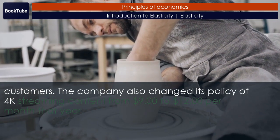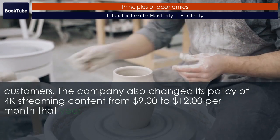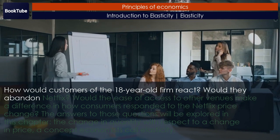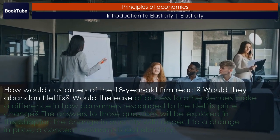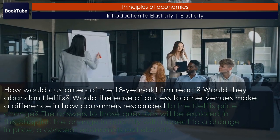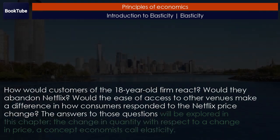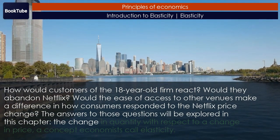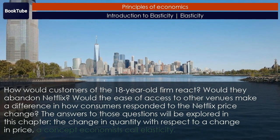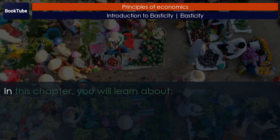The company also changed its policy on 4K streaming content from $9 to $12 per month that year. How would customers of the 18-year-old firm react? Would they abandon Netflix? Would the ease of access to other venues make a difference in how consumers responded to the Netflix price change? The answers to those questions will be explored in this chapter — the change in quantity with respect to a change in price, a concept economists call elasticity.